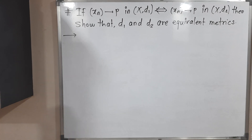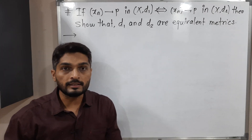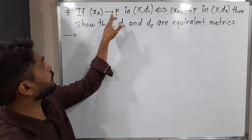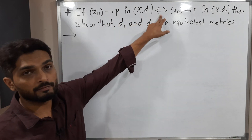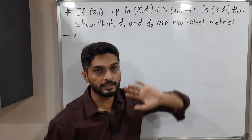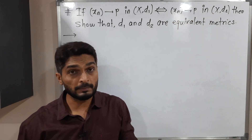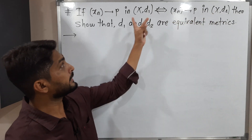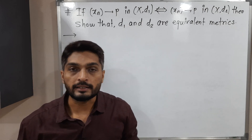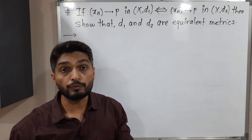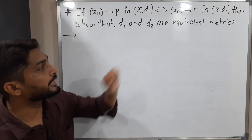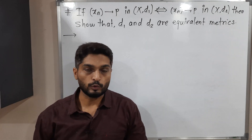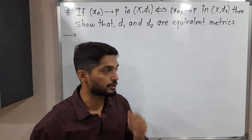Hi everyone, in this video we are going to discuss this result. This result says: if Xn converges to P in (X,d1) if and only if Xn converges to P in (X,d2) — that means these two statements are equivalent — this is the given information. So let us start with the given information.